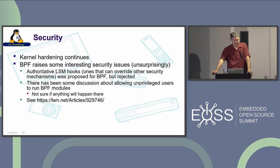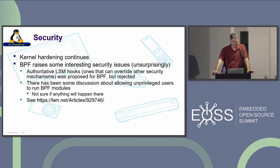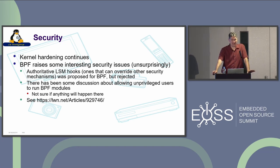Kernel hardening continues in the area of security. BPF raises some interesting security issues — they wanted to do something called authoritative LSM hooks, and that was rejected. There's been discussion about allowing unprivileged users to run BPF modules — allowing an unprivileged user to inject code into the running kernel. What could go wrong?